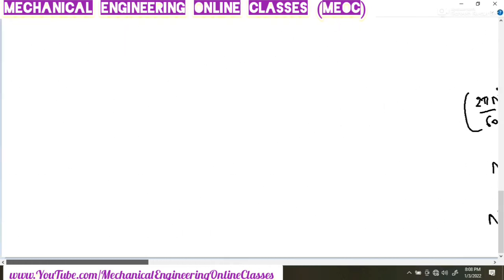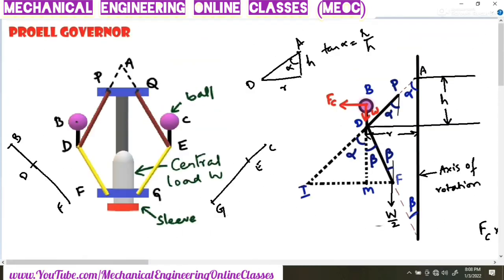Key points to note: as governor speed increases, balls at B and C experience centrifugal force and move away from the spindle. For the sake of analysis, we assume DB to be vertical, though in practice it will not always be vertical.